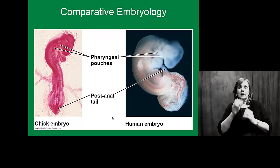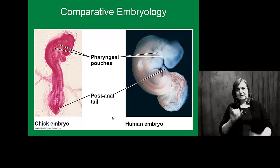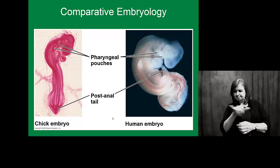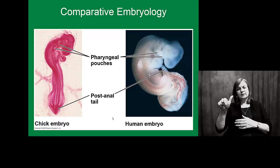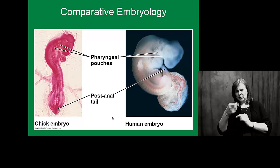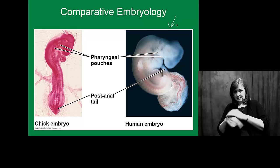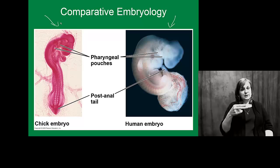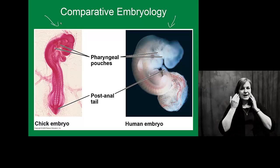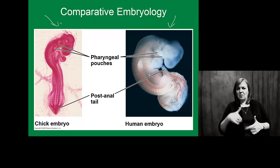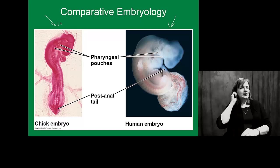We can also look at something known as comparative embryology — comparing the embryos of different organisms, here comparing a chicken and a human. A couple of characteristics to point out are a post-anal tail: you had a tail as an embryo. We also had something known as pharyngeal pouches. In some organisms, these pharyngeal pouches become associated with gills and breathing apparati in aquatic animals. But in humans and in chickens, where we're not underwater, they actually become associated with ear structures.